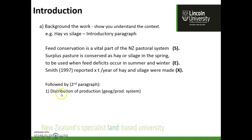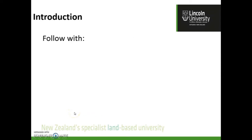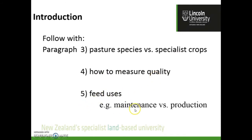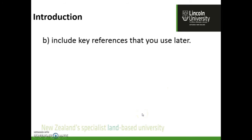In the second paragraph of the introduction I might talk about the distribution of production. For example, in the Waikato in New Zealand it's always wet, so we tend to make silage rather than hay. The third paragraph could indicate what species can be used, the fourth how we measure quality, and then I could finish by discussing how the end use — maintenance versus production — influences whether we make hay or silage. That would be around five paragraphs, including some key references.